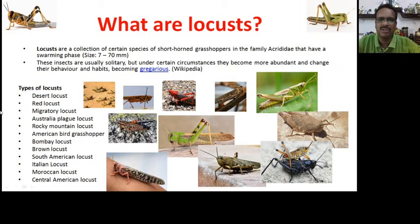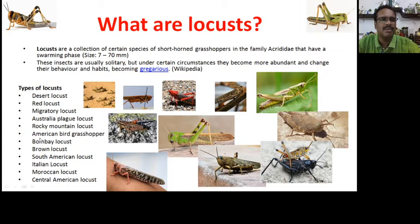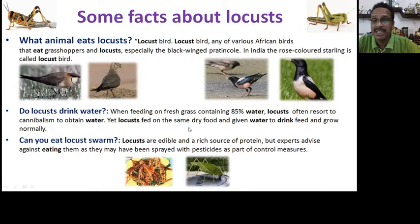There are different types of locusts, and as you can see in the pictures, they come in different colors — red, green, yellow, and brown. There is the desert locust, which is currently in India; the red locust; migratory locust; Australian plague locust; Rocky Mountain locust; and many others including Bombay Brown, South American, Italian, Chinese, and Central American locusts.